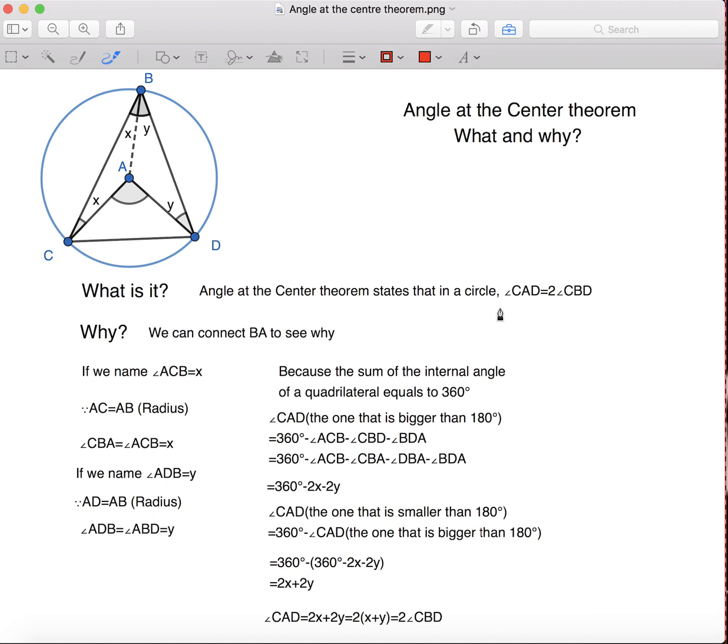It sounds very confusing, but it basically states that in this diagram, angle CAD is twice as big as angle CBD.